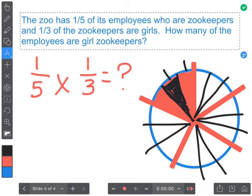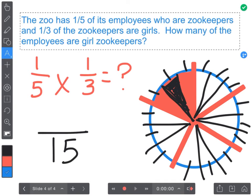One, two, three, four, five, six, seven, eight, nine, ten, eleven, twelve, thirteen, fourteen, fifteen. Fifteen represents my whole or my denominator and one of those was colored in. So one-fifteenth of the employees at the zoo are girl zookeepers.